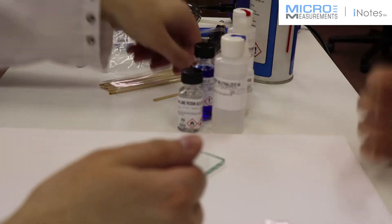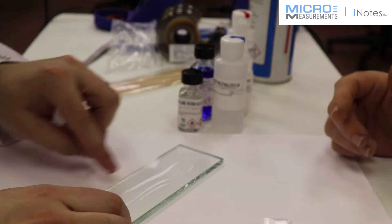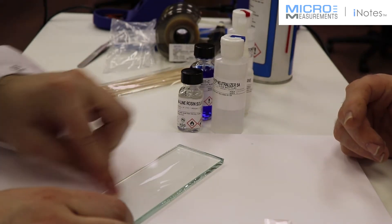And the Cyanoacrylate Adhesive, the M-Bond 200 that we're going to use, in fact, likes a basic or neutral surface.